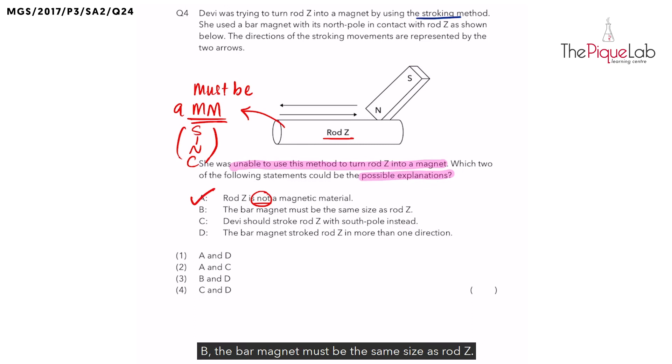Option B: The bar magnet must be the same size as rod Z. Does the bar magnet here have to be the same size as rod Z? As long as we stroke the rod made of a magnetic material with a bar magnet using the correct method, we can turn the rod into a magnet. Both do not have to be the same size. So this explanation is wrong.